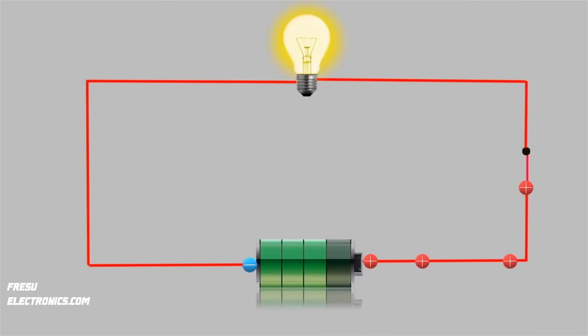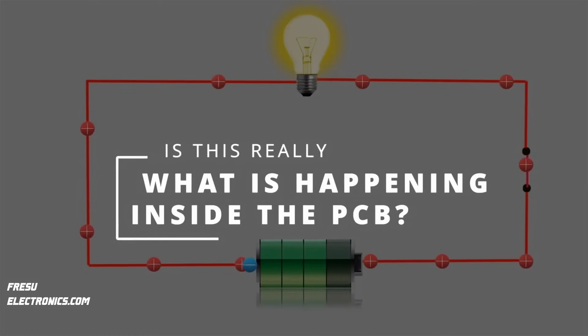One common way to think about signal transmission is in terms of voltage and current. We often compare the flow of current in a conductor to water flowing through pipes. This analogy is helpful for building simple circuits, but does it suffice to describe what really happens inside the PCB?